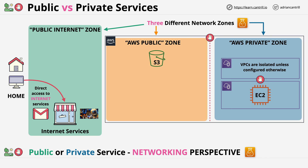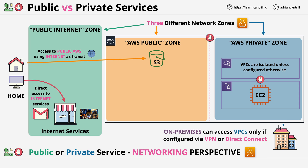If you access AWS public services from anywhere with a public internet connection, your communication uses the public internet for transit to and from this AWS public zone. This is why you can access AWS public services from anywhere with an internet connection — the internet is used to carry packets from you to the AWS public zone and back again. You can also configure virtual or physical connections between on-premises networks and AWS VPCs, so private networks can be connected together, but only if you decide to allow it.